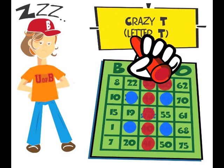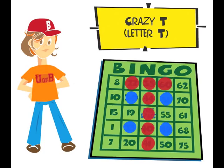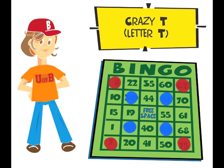Let's see how the bingo pattern should look if you win and all the open spaces get marked. In the game Crazy T, the corners are usually free. Mark your corner spaces before the game starts with a color that you will be using to play.